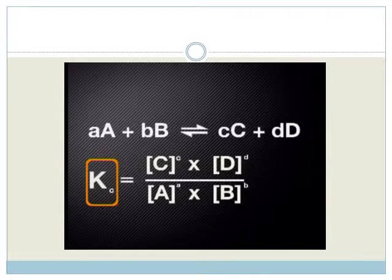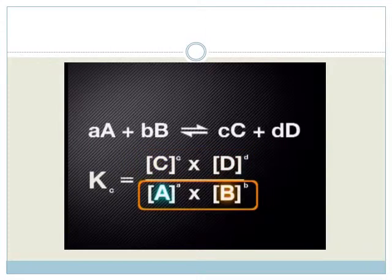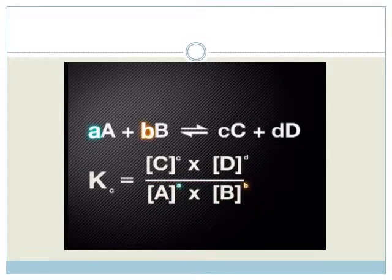Firstly, notice that Kc is a special ratio. On the numerator we have the concentration of the products C and D multiplied together. In the denominator we see the concentration of the reactants A and B multiplied together. Secondly, notice that the values in front of each product and reactant are used as exponents in the expression. We can use this general expression to write down the equilibrium constant for specific reactions.